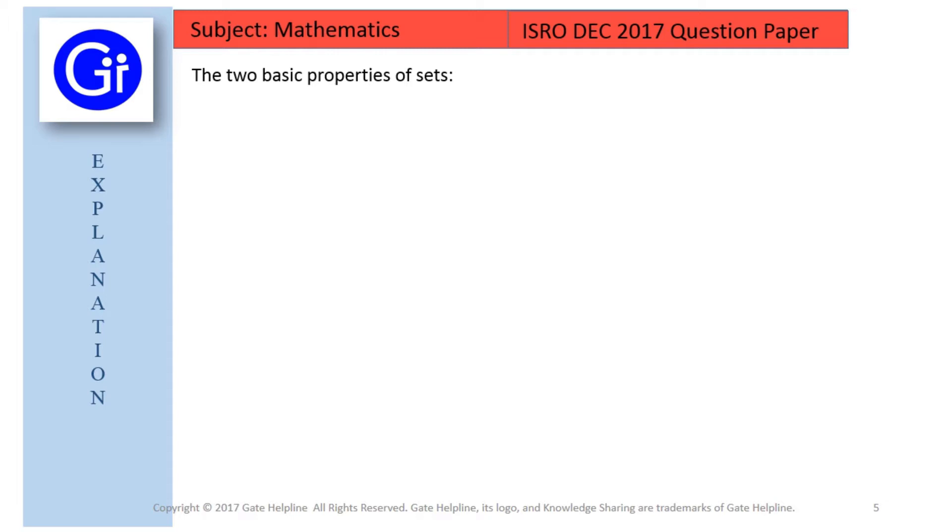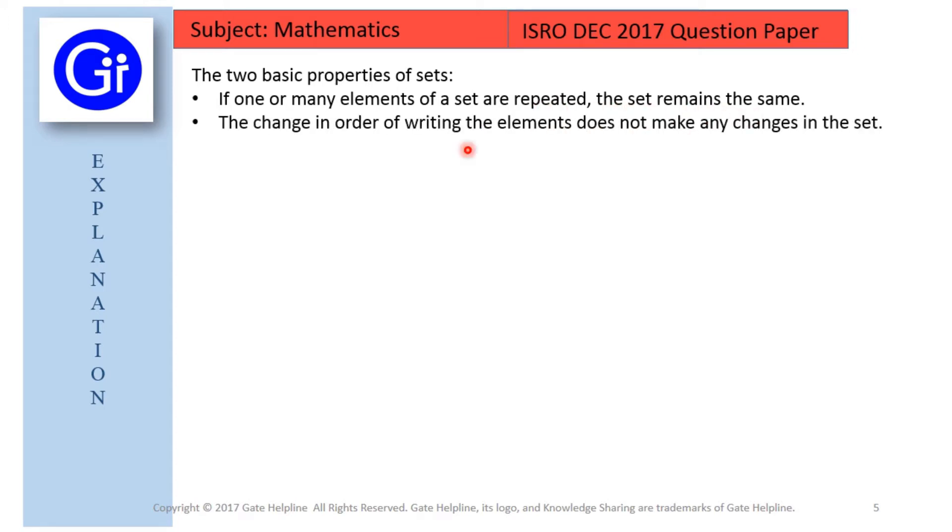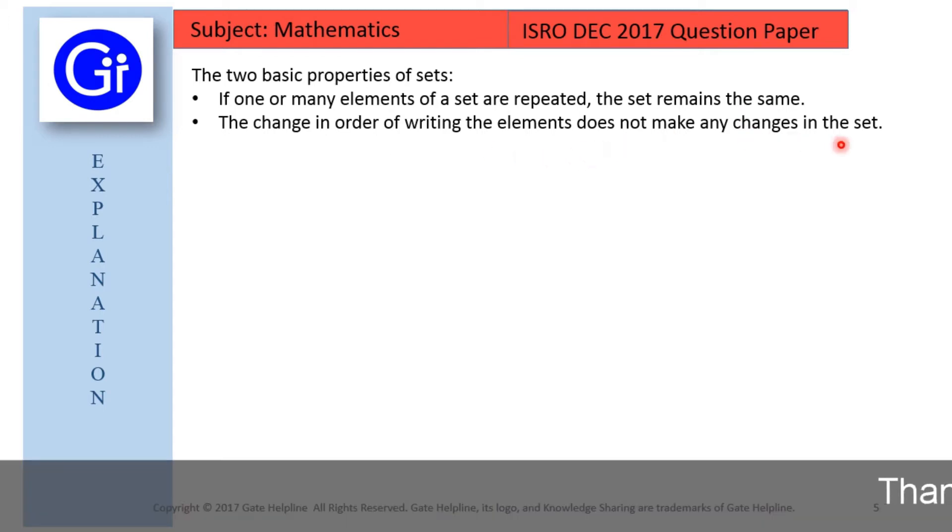So first of all we will see the two basic properties of a set. The first one is if one or more elements of a set are repeated the set remains the same, and second the change in order of writing the elements does not make any changes in the set.